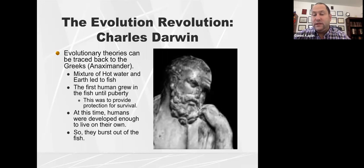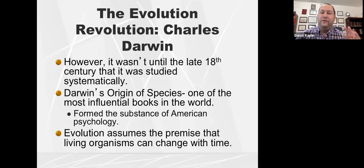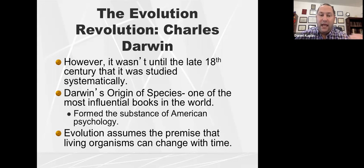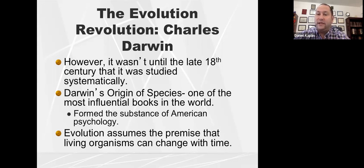This may seem primitive and unsupported by science, but Anaximander was trying to figure out where did we come from — how did this all come to be. That's our early theory of evolution, though it's a philosophy, a speculation. Whereas Charles Darwin becomes a person who systematically studies evolution, and in the late 1800s he's able to try and create a scientific case for evolution. Darwin's Origin of Species became one of the most influential books in the world at that time and remains influential to this day.